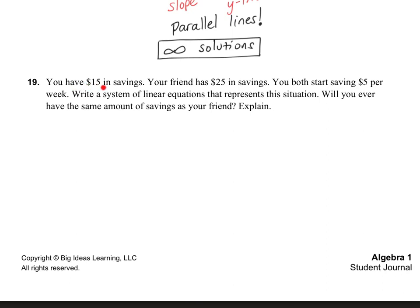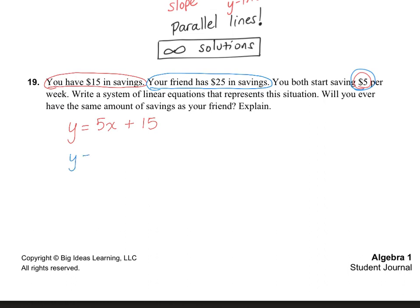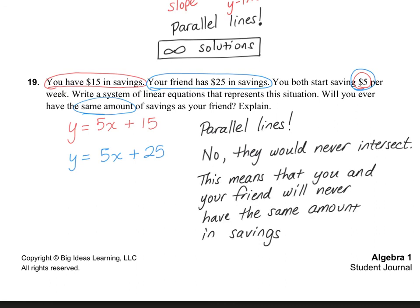On number 19, you have $15 in savings and your friend has $25 in savings. You both start saving $5 per week. Your equation is y = 5x + 15, and your friend's equation is y = 5x + 25. The question is whether you will ever have the same amount. Both lines have the same slope of 5 but different y-intercepts, so if graphed they would be parallel. That means no, you and your friend will never have the same amount of money in your savings.